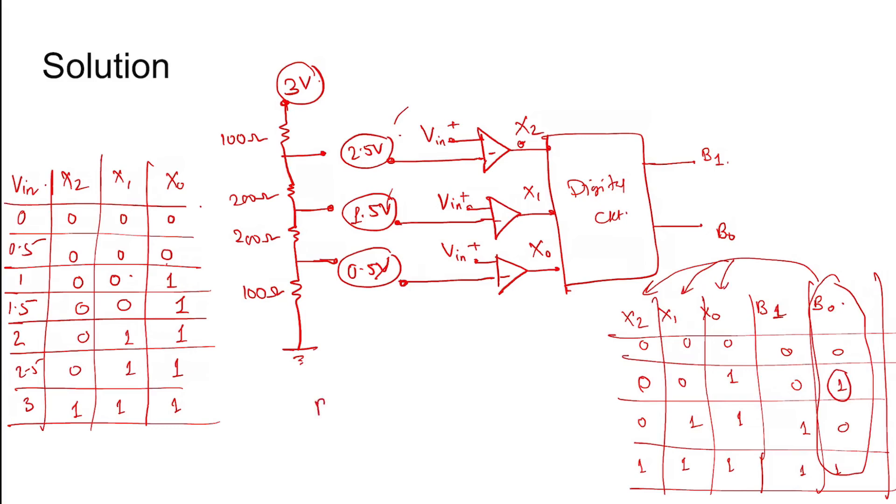b0 = x2̄x1̄x0 + x2x1x0, which equals x0(x2̄x1̄ + x2x1), which simplifies to x0(x1 XOR x2). This is the answer.